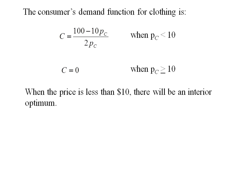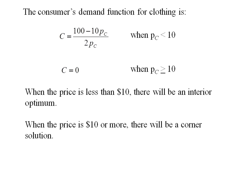When the price is less than $10 we have an interior optimum solution, and when the price is $10 or more there's a corner solution where the consumer buys all food and no clothing.